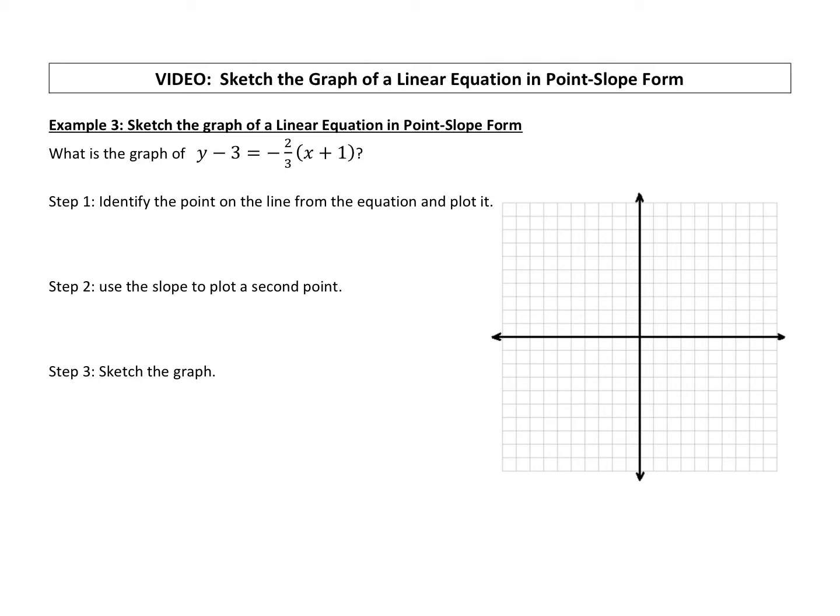Step one, so here's the graph. We have y minus 3 equals negative 2 thirds times x plus 1. This is point-slope form. If you want to graph from point-slope form, what you do is you first identify the point on the line from the equation and plot it.